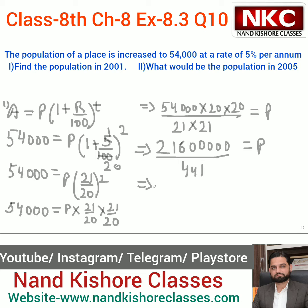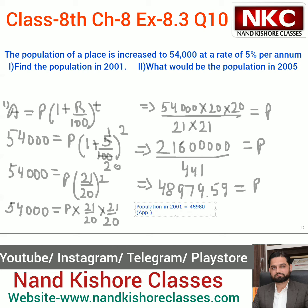Dividing them I get 48,979.59, which is approximately 48,980. So population in 2001 is approximately 48,980 — write it with the approximation symbol. This is the best way of doing this question. Please check Part 1 carefully before we start Part 2.